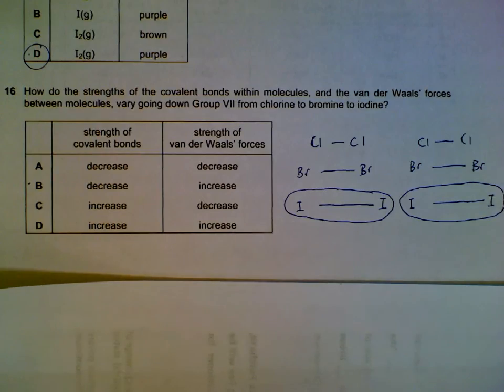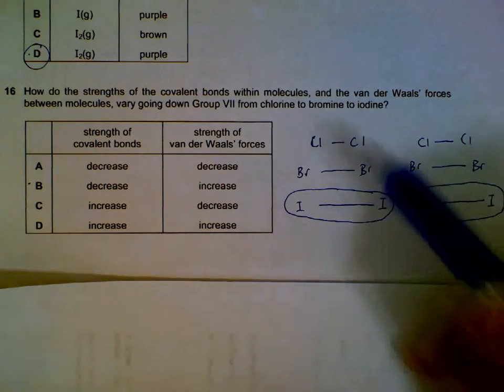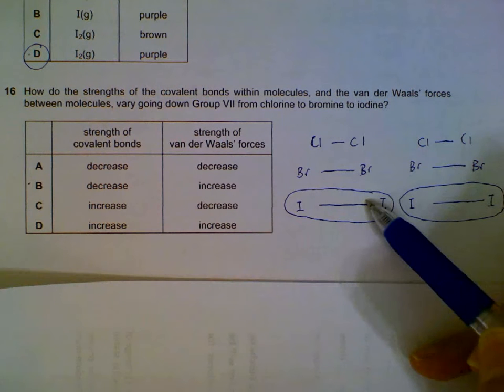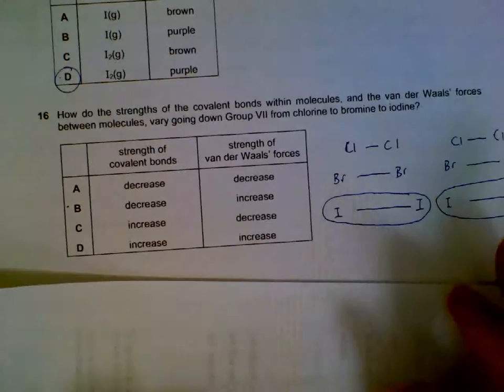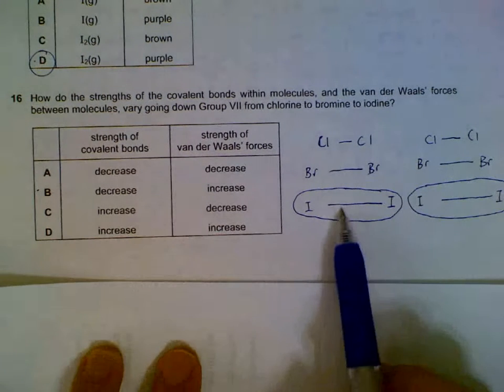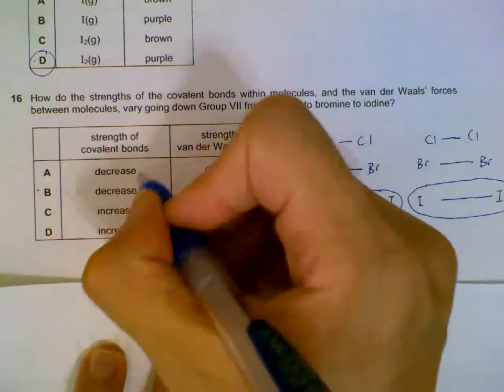16. As you go down the group, the atoms get larger for the halogens, so they will have a longer bond length, and then their strength of the covalent bond will be decreasing.